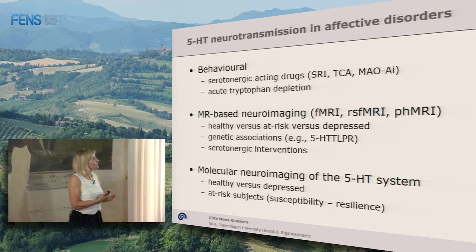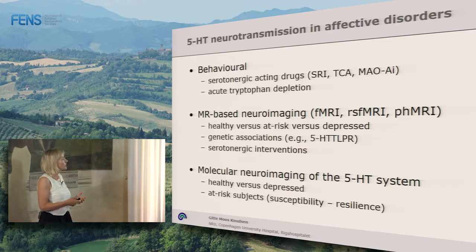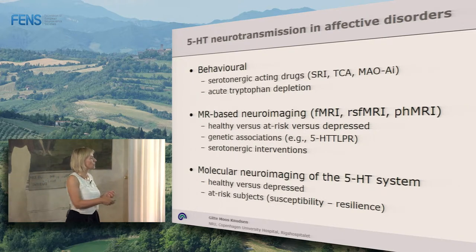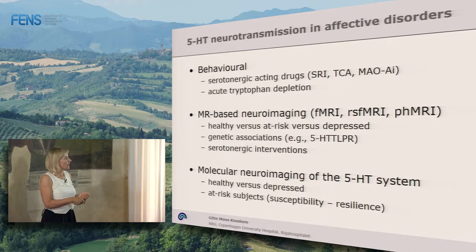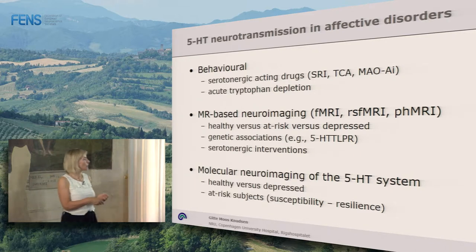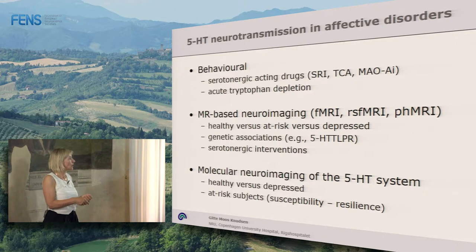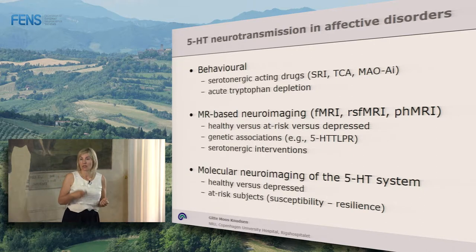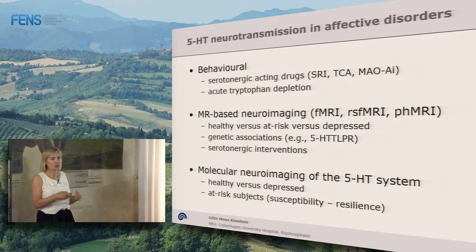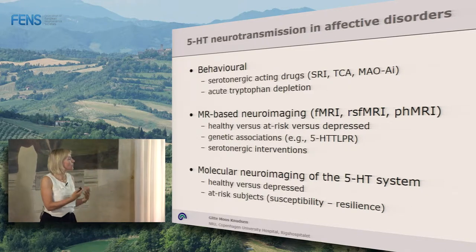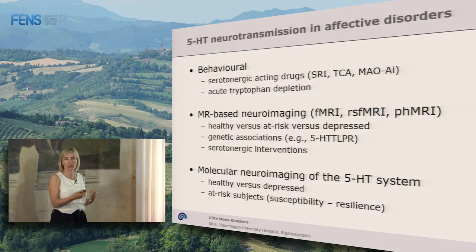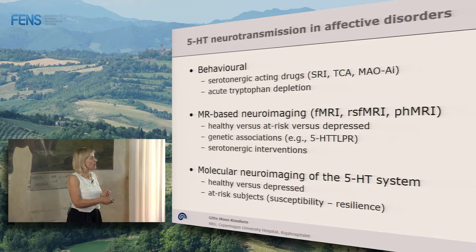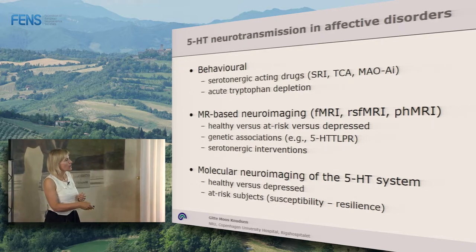Moving on to affective disorders — how can we study these? One obvious way is to look at healthy people versus depressed. Another viable way would be to study people who are at risk — either susceptible to developing affective disorders, or more interestingly, people who are resilient to affective disorders — because if we know the factors of resilience, that might actually help us understand how to support people who do develop affective disorders.